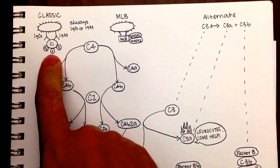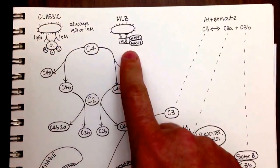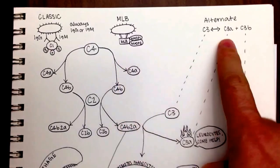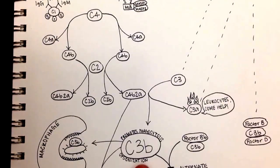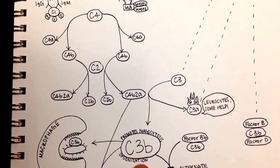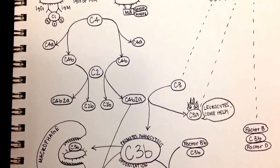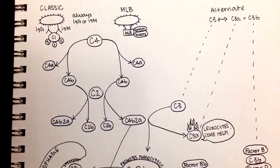So as you can see here on the top, you have the classical pathway, the mannose-lectin binding pathway, and the alternative pathway. And the goal we're going to work towards so far in the beginning is going to be getting to C3b. So let's follow all these pathways down there.